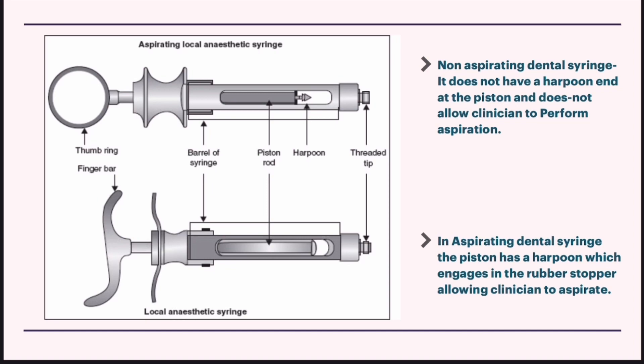In the non-aspirating syringe, we do not have a harpoon — the piston rod end is flat and smooth. To maximize safety, we always recommend using aspirating syringes so that we ensure we are not in a blood vessel, which helps reduce the risk of toxicity to the patient.